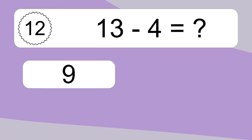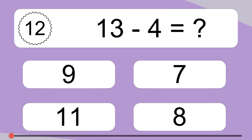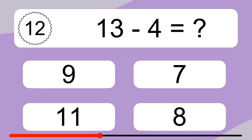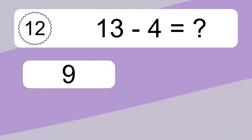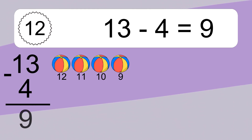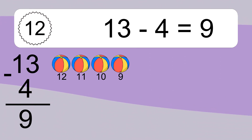13 minus 4 equals what? 13 minus 4 equals 9. Let's count it. 12, 11, 10, 9.